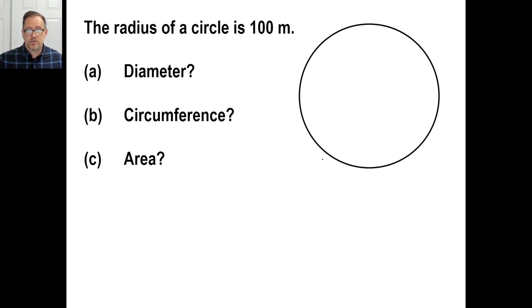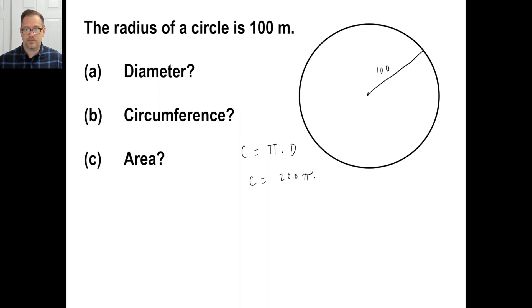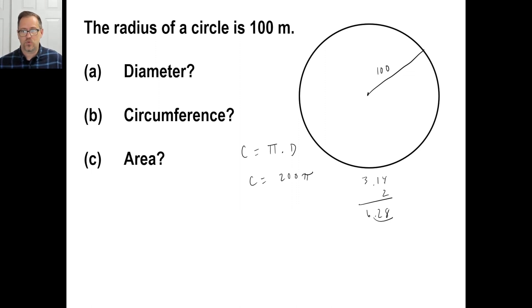The radius of a circle is 100 meters — that's a huge circle, twice as long as a football field. The diameter is 200 meters. The circumference is pi times 200 — you can write 200 pi, or do 3.14 times 200: that's 3.14 times 2 equals 6.28, so the circumference is 628 meters.